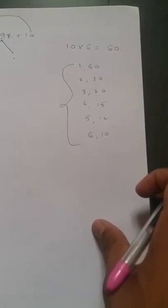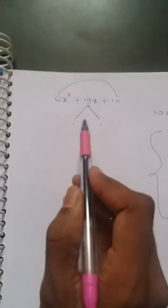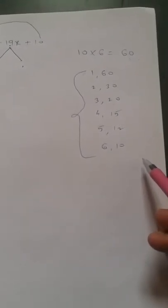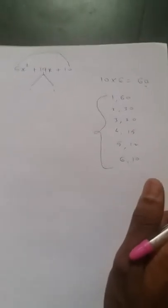If we multiply those two terms we need to get the number 60. So which pair is the correct one from this?